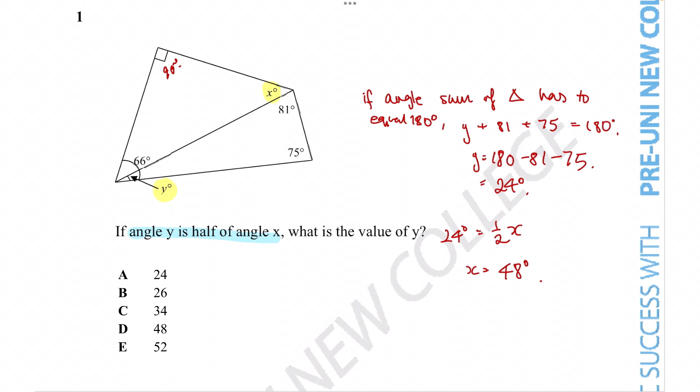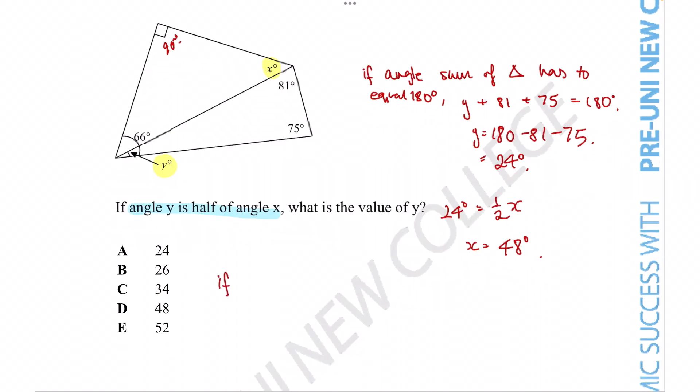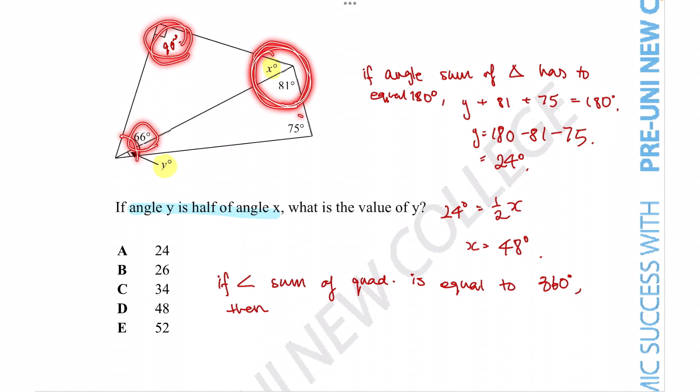So if angle sum of quadrilateral is equal to 360 degrees, then we can tell that we can add all the angles together. So we are told this large angle is 66 degrees, this angle is 90 degrees, this angle together is going to be x plus 81 degrees, and this is going to be 75 degrees. So the number sentence would read 66 plus 90 plus x plus 81 plus 75 is equal to 360.